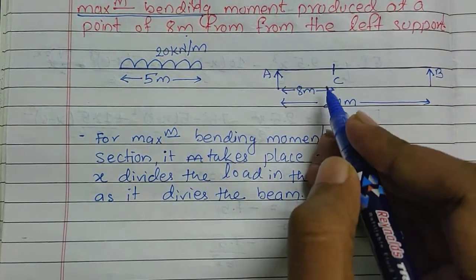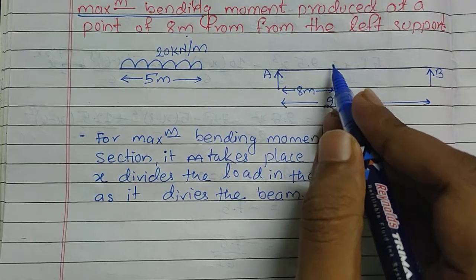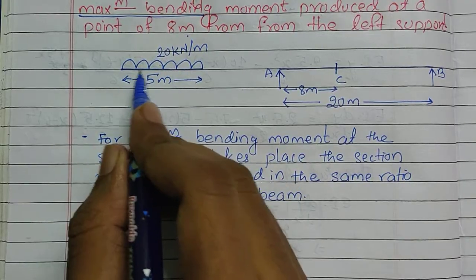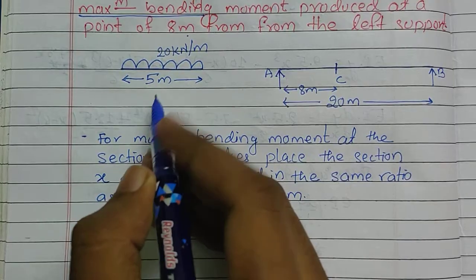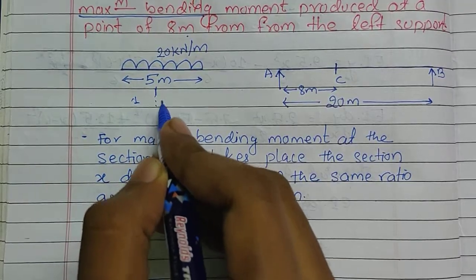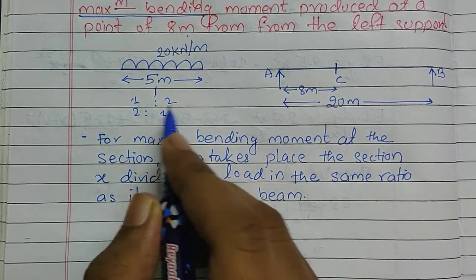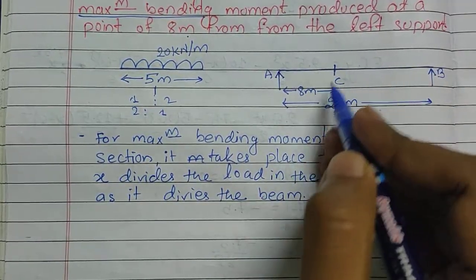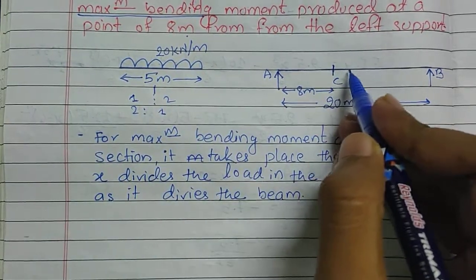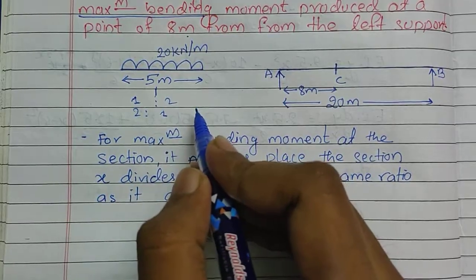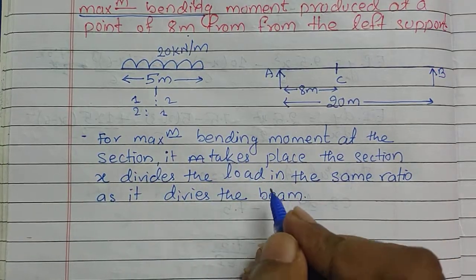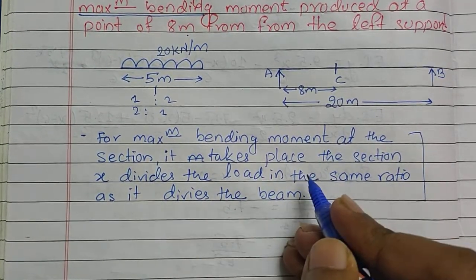From the question we need to find the maximum bending moment. This point says that if the 5-meter UDL of 20 kN per meter is divided in some ratio — say one is to two or two is to one — then the beam should also be divided in the same ratio. If the load is divided into a one-to-two ratio when placed on this span, then the beam must also be divided in the same ratio for maximum bending moment to occur.